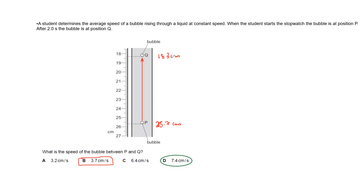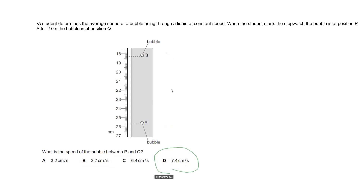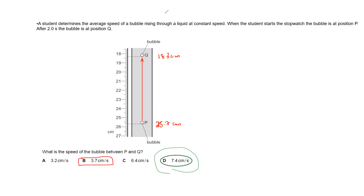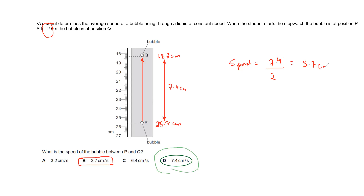First find the total distance travelled. The right answer is B. The total distance is from 25.7 to 18.3, so subtracting gives 7.4 centimeters. The time taken is 2 seconds. Average speed equals distance divided by time: 7.4 divided by 2 equals 3.7 centimeters per second. So B is the right answer.